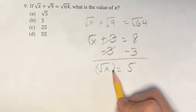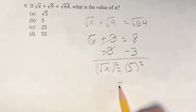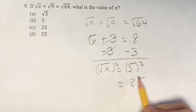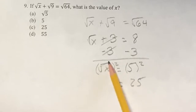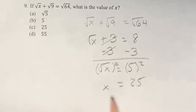And if we square both sides, this side we get 25. 5 squared is 25. But on this side, the square root of something squared is going to be the thing itself. So x is equal to 25.